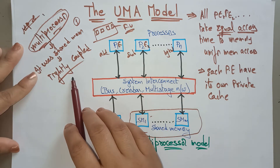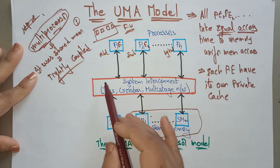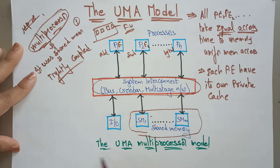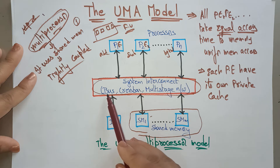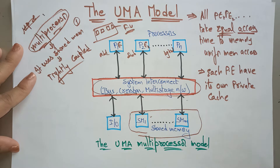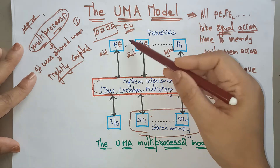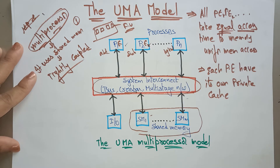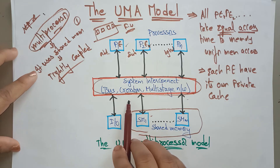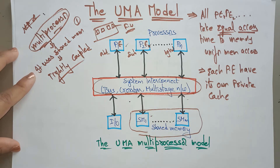Here, if you clearly observe, there is an interconnection between the processing elements and the peripherals. This interconnection network can be a common bus, a crossbar, or multi-stage networks. Based on the system configuration and how many processing elements you are using, you can go for a common bus structure, crossbar, system interconnection, or multi-stage network.